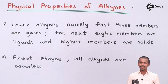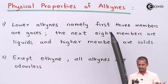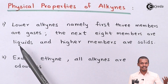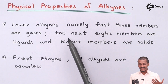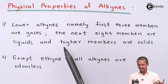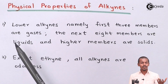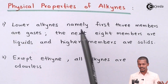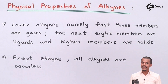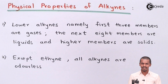The first three members of the alkynes are basically gases, the next eight members are liquids, and the higher members are solids. Similar to alkanes, the lower members of the alkynes are in a gaseous phase.